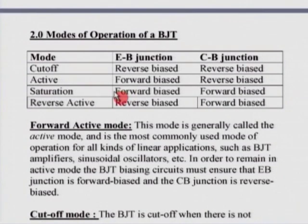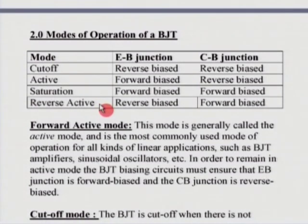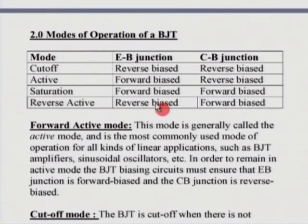There is another mode of operation which is very seldom used, yet there are applications — especially in logic circuits such as TTL gates — that use this particular mode. This is called the reverse active mode; the previous active mode is actually called forward active mode. In reverse active mode, the emitter-base junction is reverse biased while the collector-base junction is forward biased. You can think of reverse active mode as an interchanging of emitter and collector junctions relative to the forward active mode.